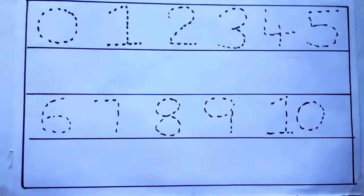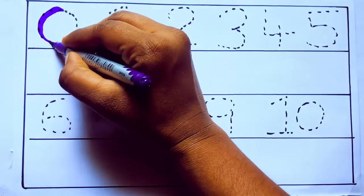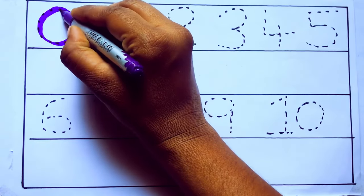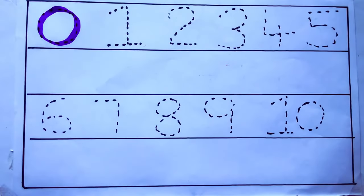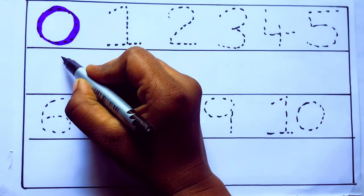Let's draw numbers. Violet color, 0, Z-E-R-O, 0.